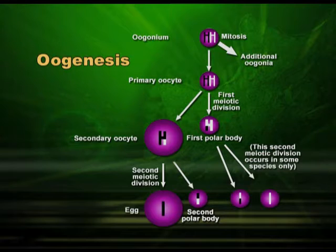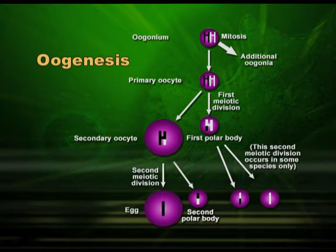In case of spermatogonia or gametogenesis in man, both cells were of equal size. Here it is not so — one is big, one is very small. The small one is called polar body and the big one is a cell. Both are having half the number of chromosomes. Now these two will undergo the second division of meiosis, which is simple mitosis. The bigger one will divide again unequally into one big and one small. And the small polar body — sometimes it divides, sometimes it does not. In some species it divides. If it divides, it will give rise to two polar bodies.